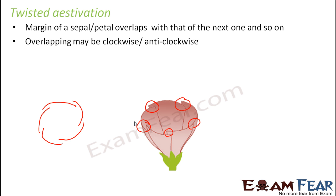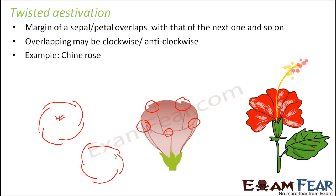This overlapping can be clockwise or anticlockwise — it can go both ways. So it is not limited to just one direction. The example of twisted estivation is China rose, where if you look at the arrangement of petals or sepals you can actually see this kind of estivation.